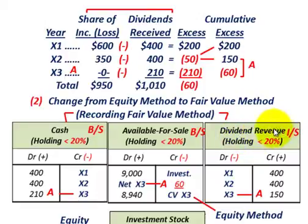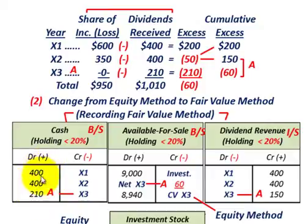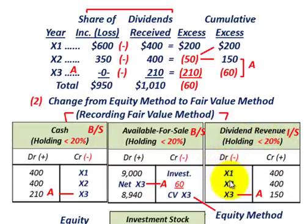For the fair value method, we also have dividend revenue on the income statement. In our cash account, we record dividends received: $400,000 for year X1, $400,000 for year X2, and $210,000 for year X3. The balancing amount goes to dividend revenue. For years X1 and X2, dividend revenue equals dividends received — $400,000 each year. But for year X3, it's different.